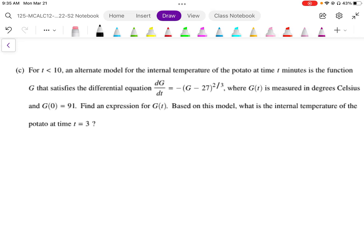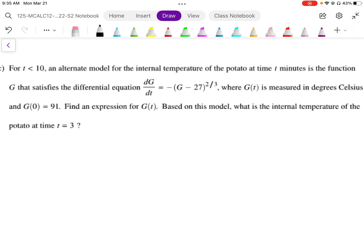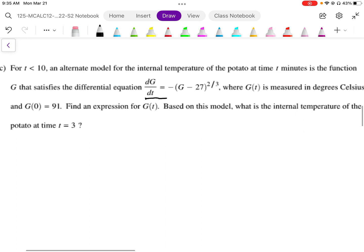Part C gives an alternate model for t less than 10, which satisfies the differential equation dG/dt equals negative (G minus 27) to the power of 2/3.